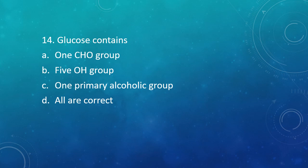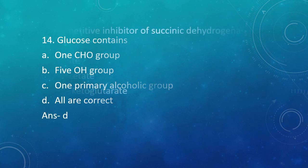Question 14: Glucose contains — Option A: One CHO group. Option B: Five OH groups. Option C: One primary alcoholic group. Option D: All are correct. The correct answer is Option D — all three are correct.